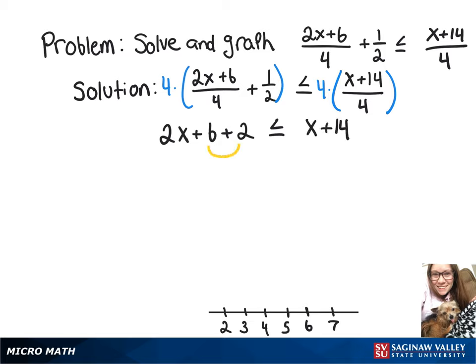So now we see on this side we can combine the 6 and 2. So we've got 2x plus 8 is less than or equal to x plus 14.